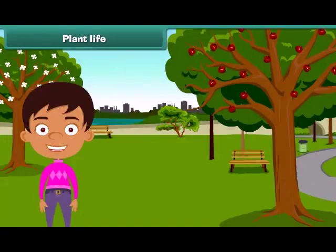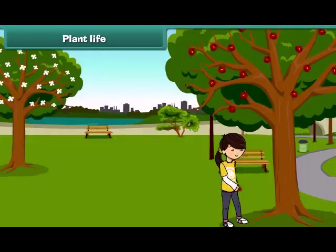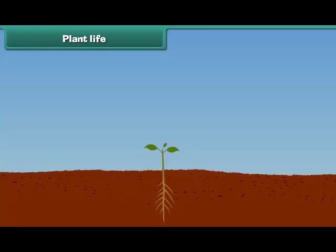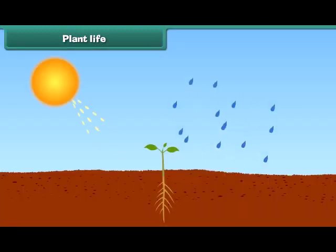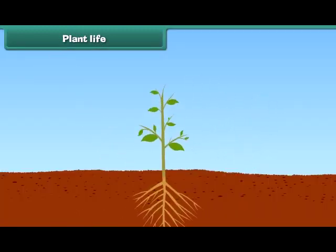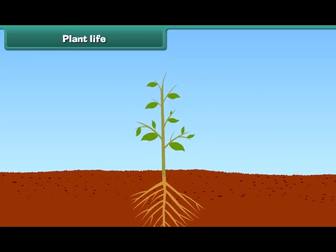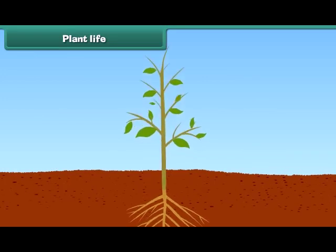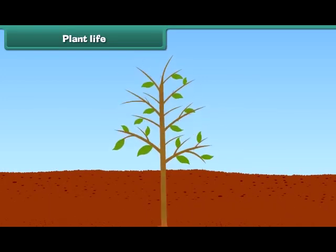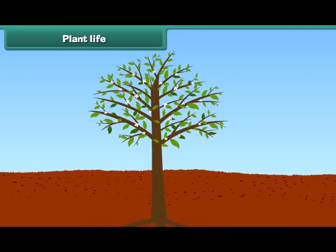Hello, friends. I am Sam. Do you know that plants are also our friends as they give us food and many other useful things? Besides this, they also give us shade. They are also living like us. They need their own food and water to live and grow. They also have the ability to grow and become tall like us.